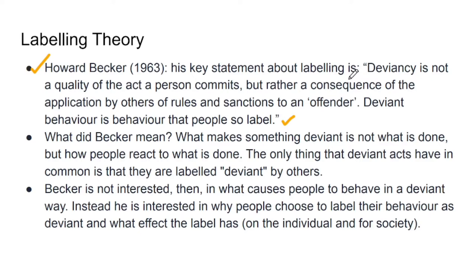Many things can come under deviance — crime, school dropout, not studying. But our topic here is not deviance itself; you just need to know the basic meaning of deviant. In Labeling Theory, Howard Becker says that whether someone is deviant depends more on how they have been labeled — which behavior has been labeled as deviant. What makes something deviant is not what is done; it doesn't make a person deviant based on what they did, but rather on how people react to what was done. The only thing that deviant acts have in common is that they are labeled as deviant by others.